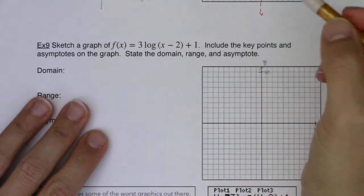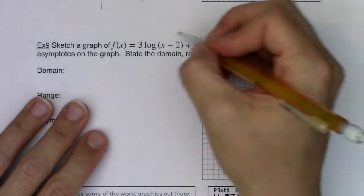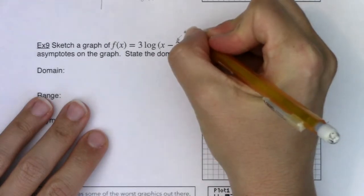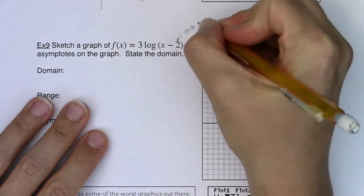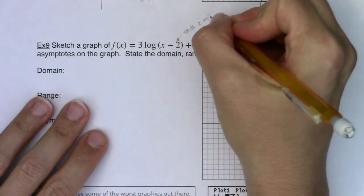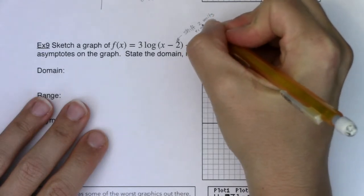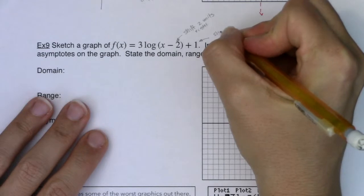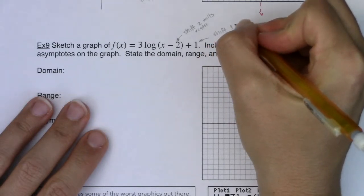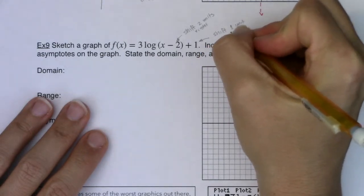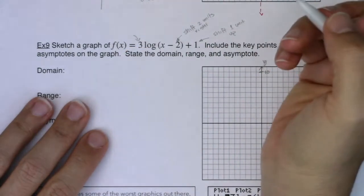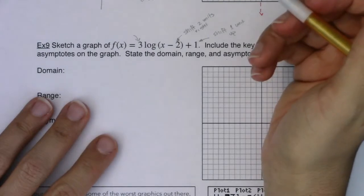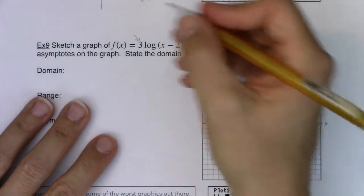Things that I hope we notice: I've got this x minus 2 here, so this 2 here is going to shift me 2 units right from the origin. This 1 outside my grouping symbol is going to shift me 1 unit up. And this 3 outside my grouping symbol is going to stretch my y values vertically by a factor of 3.